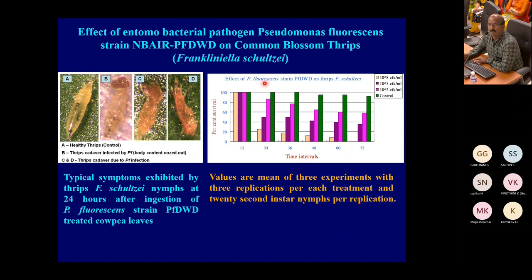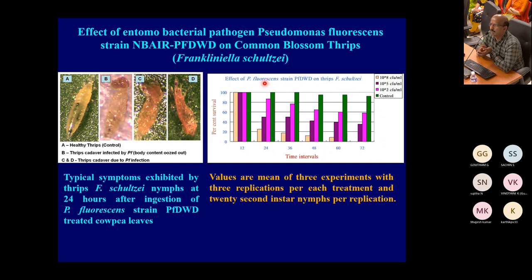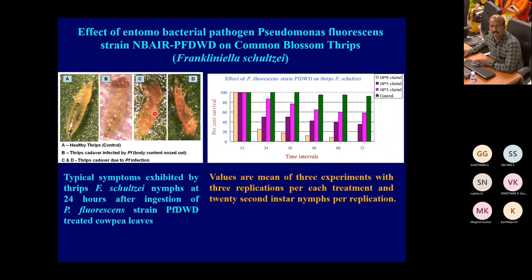Some of the work I have done: when I joined five years ago, some scientists were working on BT and others on fungi, so I didn't want to overlap. I wanted to form a different new platform. Based on my MSc work, I took up isolation of Pseudomonas and screened the existing culture collection at NBR — where strains were used only for disease management until then. I started screening and found NBR PFWD to be very effective against thrips pathogenicity. The cadaver images show how mortality is induced and body contents ooze out.